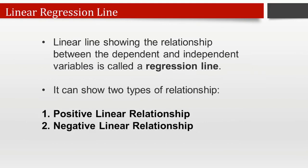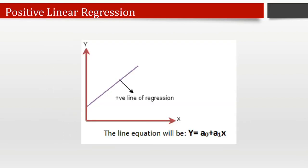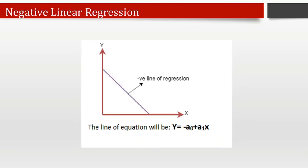A linear line showing the relationship between the dependent and independent variables is called the regression line. A regression line shows two types of relationship — positive or negative. Positive linear relationship: if the dependent variable increases on the y-axis and the independent variable increases on the x-axis, that is a positive linear relationship. Negative linear relationship: if the dependent variable decreases on the y-axis and the independent variable increases on the x-axis, that is a negative linear relationship.